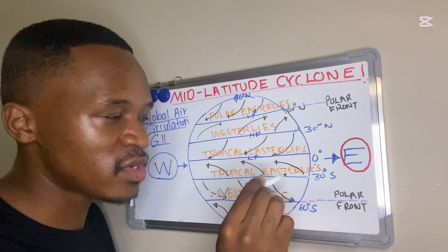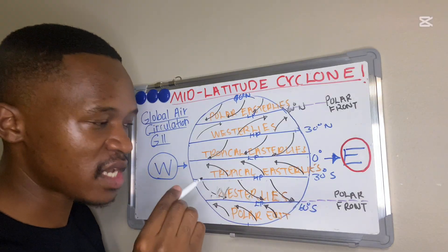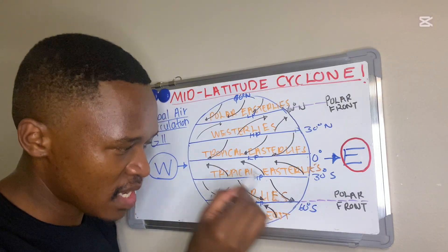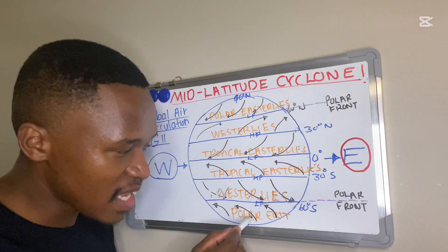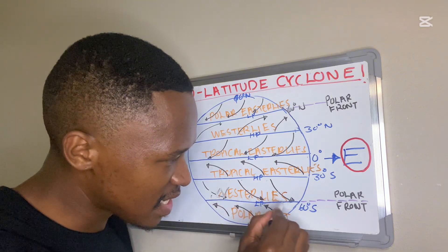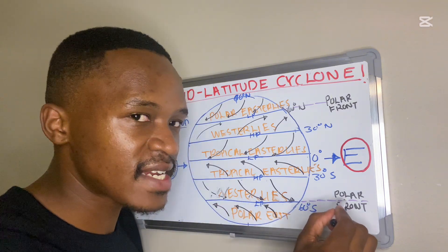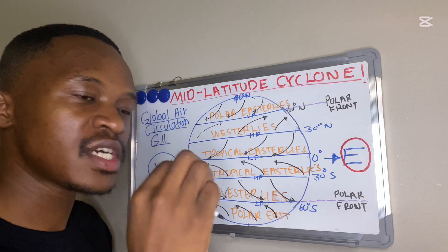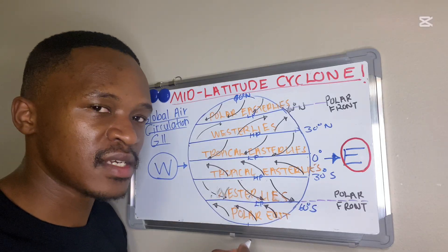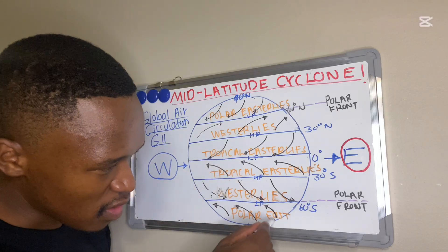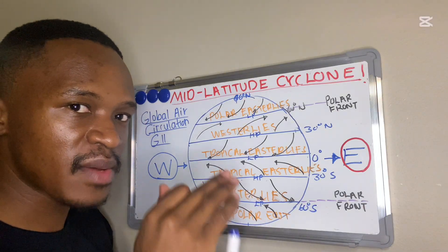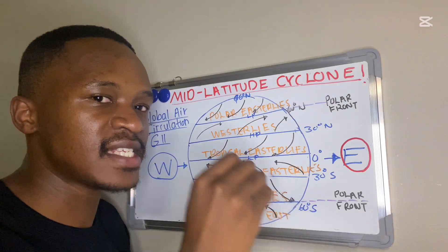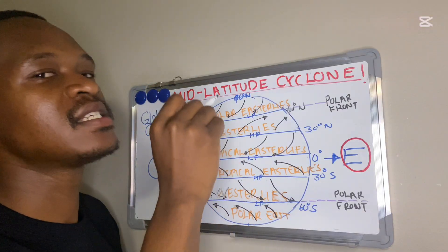Let's look at the polar front one more time — it's very important when we discuss the stages of the mid-latitude cyclone. Our westerlies bring warm, moist air from the equator. Our polar easterlies bring cold, dry air from the poles. Where they meet at 60 degrees south, we have a polar front — a boundary between two air masses of different moisture content.